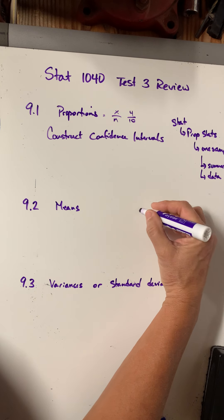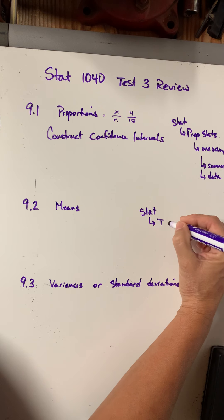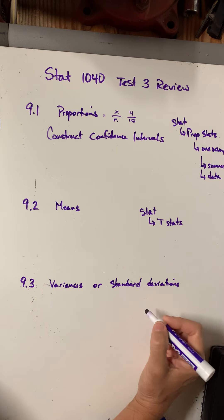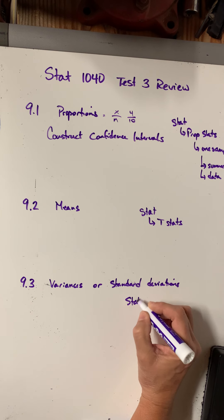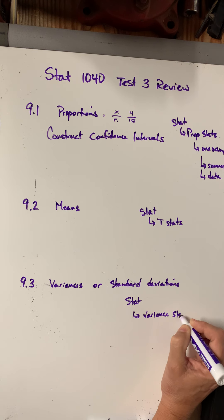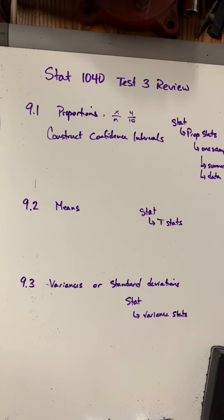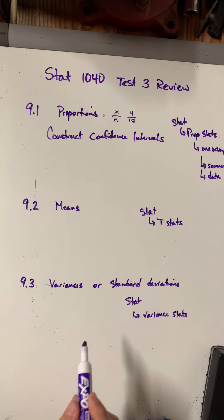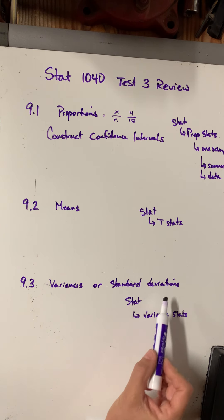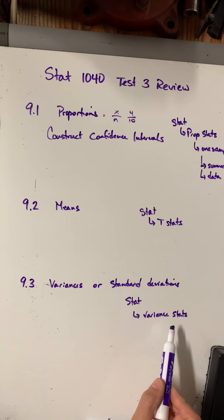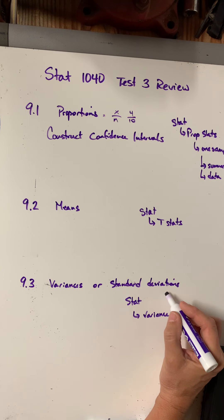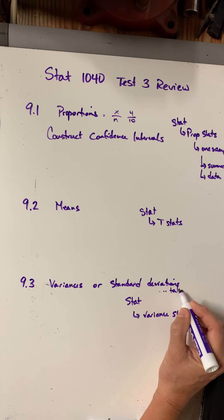Means would use Stat > T-Stats. T-Stats was for means. For variance, it would be Stat > Variance Stats. If they wanted you to construct a confidence interval about a standard deviation, we don't have a standard deviation stat — you have to use Variance Stats and then take the square root of your answers.